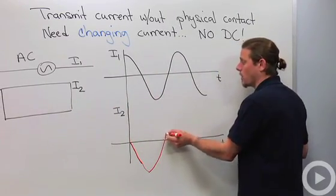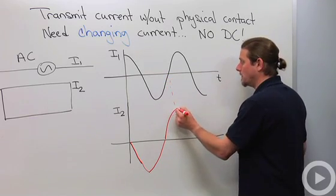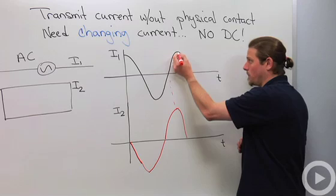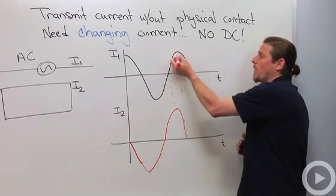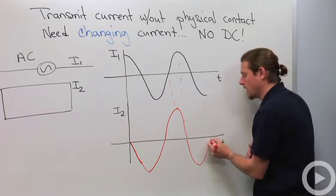So we'll go positive, maximum right here, and then down still positive until here where this current is now decreasing. And then it'll be negative like that.